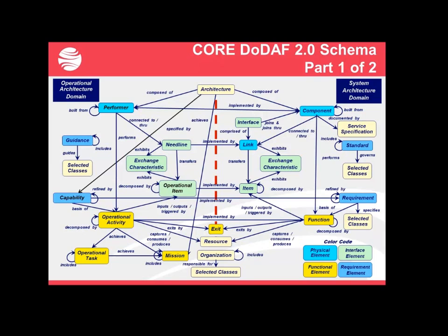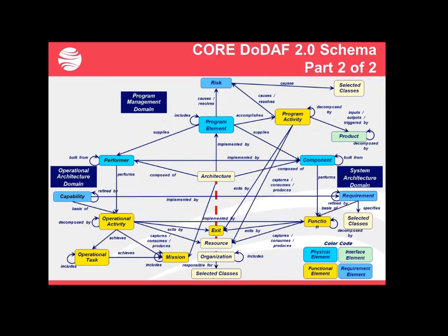With DODAF 2.0, a new item was added to the schema on the operational side known as capabilities. These are essentially the new capabilities that the architecture is intended to be based around, and they would ultimately be implemented in requirements on the system side. Both the performers and the components can be supplied by program elements. Program elements would be your work breakdown structure — the activities and tasks that are going to make up your various programs.